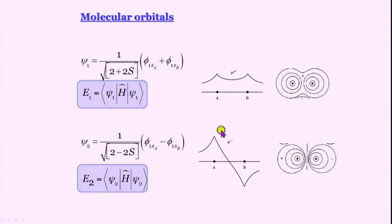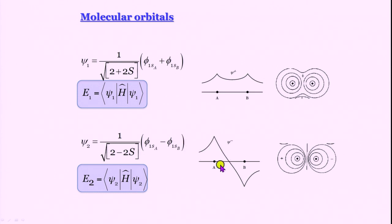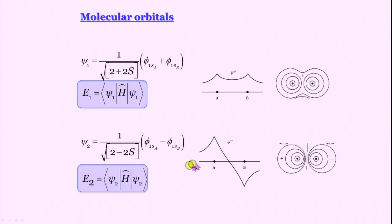From the contour diagrams and profiles, it is clear that in the first case — psi_1 — there is a buildup of electron density between the two nuclei, leading to stabilization. In the second case — psi_2 — there is a depletion of electron density between a and b, contributing to increased internuclear repulsion and higher energy. The first is the bonding orbital, the second is the anti-bonding orbital. If there were no change in energy, we would call it a non-bonding orbital.